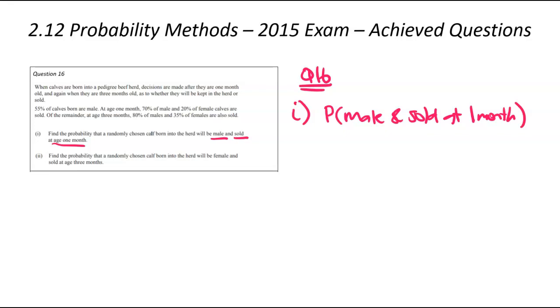For that event to happen, thinking of our multiplications, we need to break this down into the separate parts. We need to go to the probability of male times the probability of sold at one month. What's the probability of it being a male? That's the 0.55.